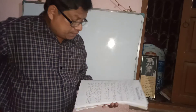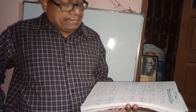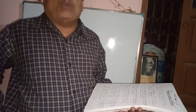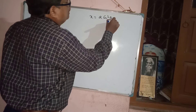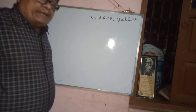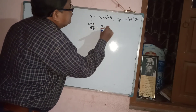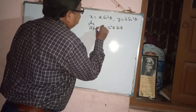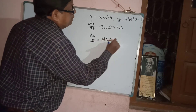Next problem: if x₁ and y₁ are the intercepts on the x-axis and y-axis respectively of the tangent to the curve x = a cos³θ, y = b sin³θ, then prove that x₁²/a² + y₁²/b² = 1. First find dy/dx: dx/dθ = -3a cos²θ sinθ, and dy/dθ = 3b sin²θ cosθ. So dy/dx = (dy/dθ)/(dx/dθ) = -b sinθ / (a cosθ) = -(b/a) tanθ.